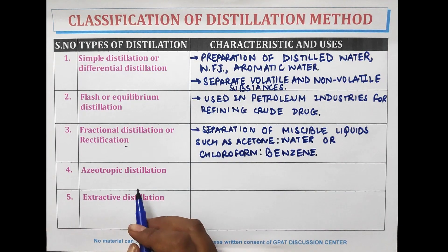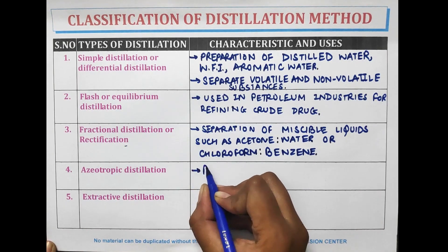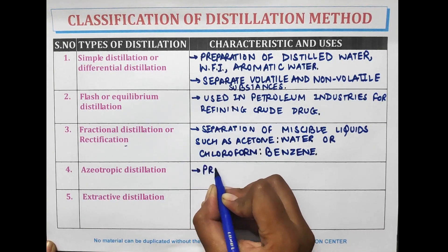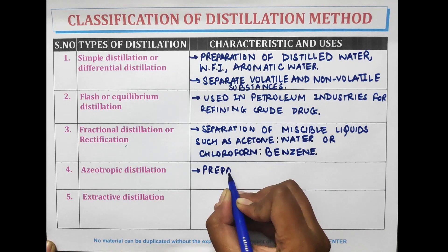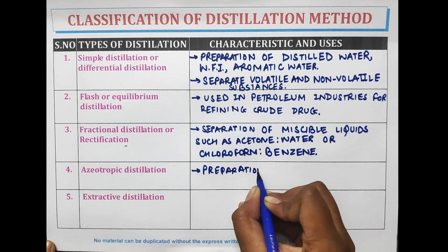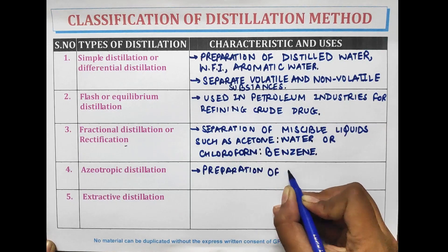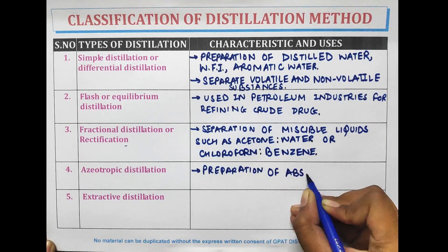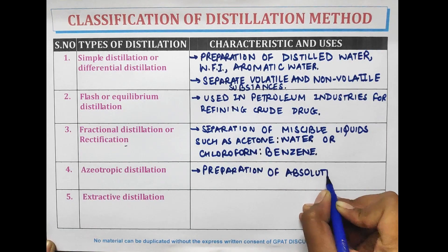Azeotropic distillation is used for the preparation of absolute alcohol.